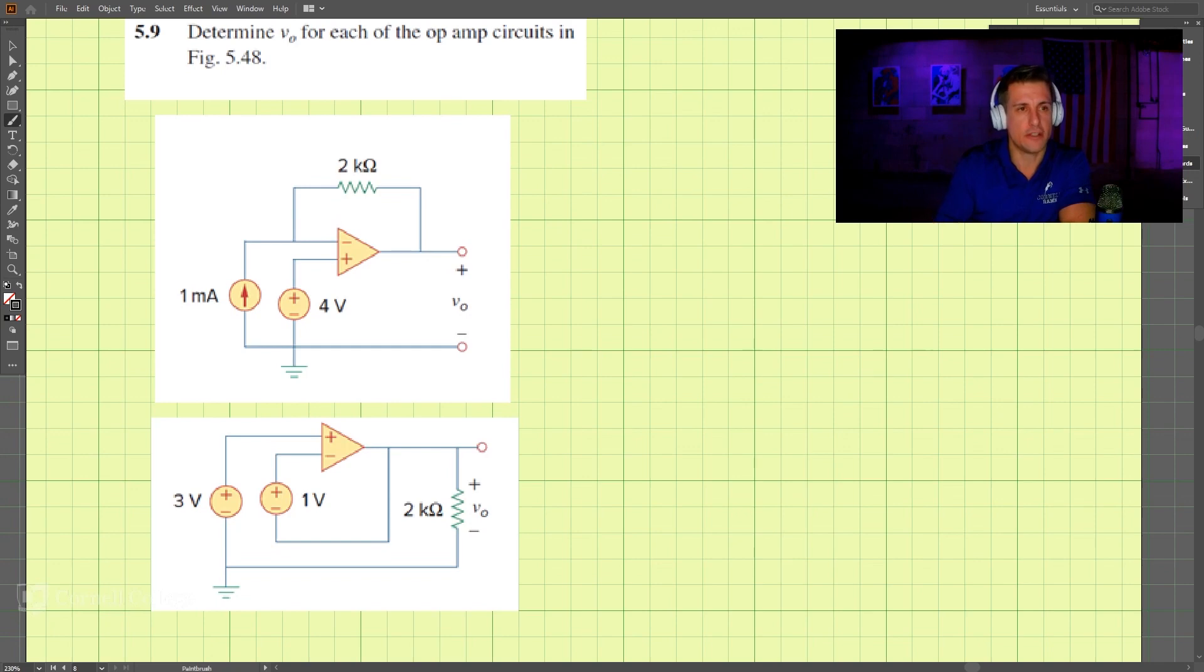We must remember several things when we do op-amps. This is an ideal op-amp, so the current going into the inputs is equal to zero. That means all of this current source is going across this resistor. So the current here is one milliamp. We know the current across here.